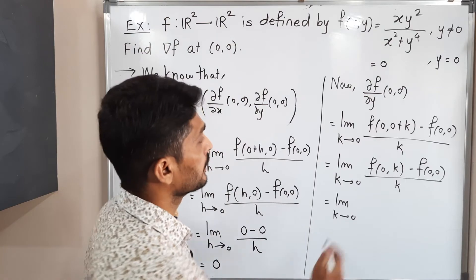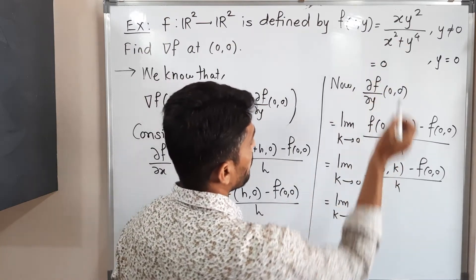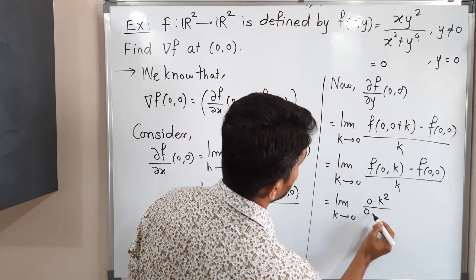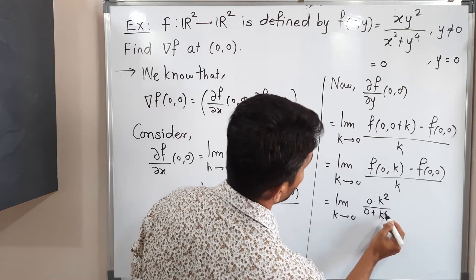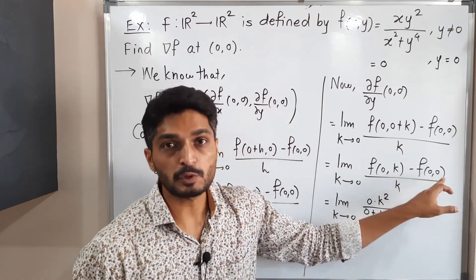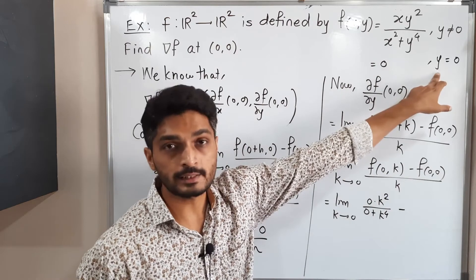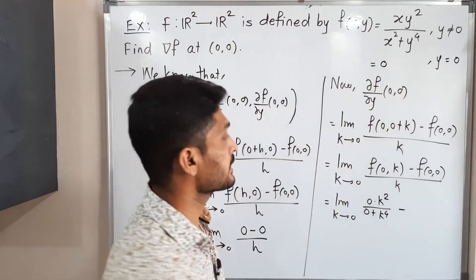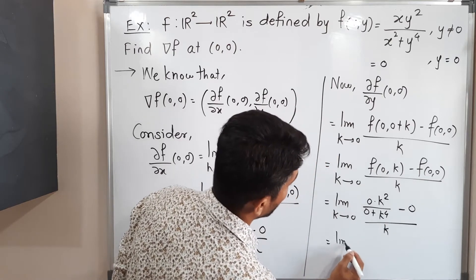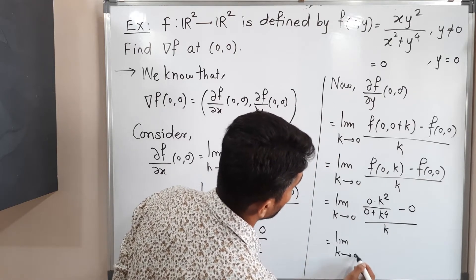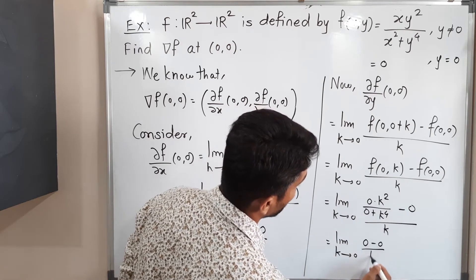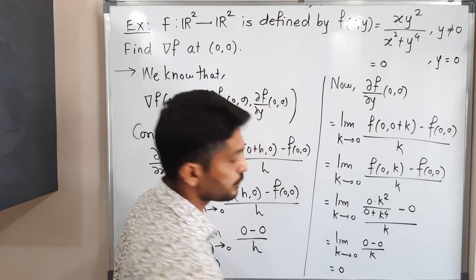Putting x = 0 and y = k into the first definition gives: (0 · k²) / (0 + k⁴) = 0. And f(0,0) uses the second definition since y = 0, so its value is 0. Therefore the limit as k→0 of (0 − 0)/k = 0. The partial derivative of f with respect to y at (0,0) is also 0.